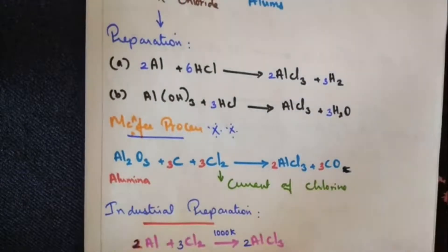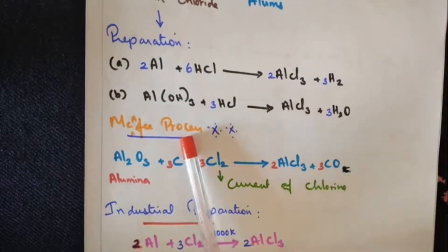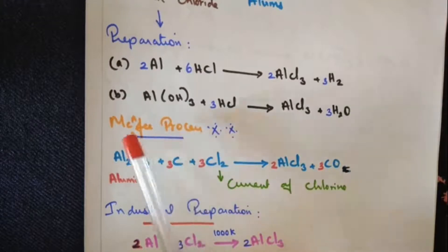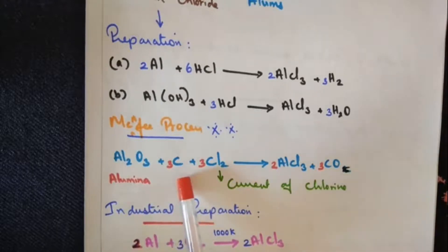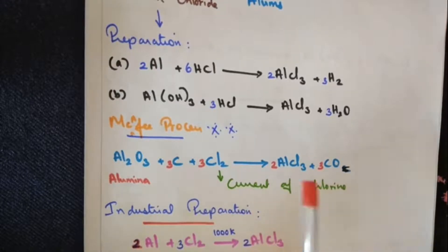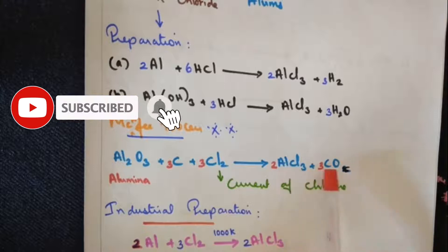As you can see in the picture, this is a very important preparation under aluminium chloride called the McPhee process. Alumina you treat with carbon - when you heat this mixture, as the temperature is increased, chlorine gas is passed in it, meaning current of chlorine is passed. We get aluminium chloride and carbon monoxide. The equation is: Al2O3 + C + 3Cl2 → 2AlCl3 + 3CO.